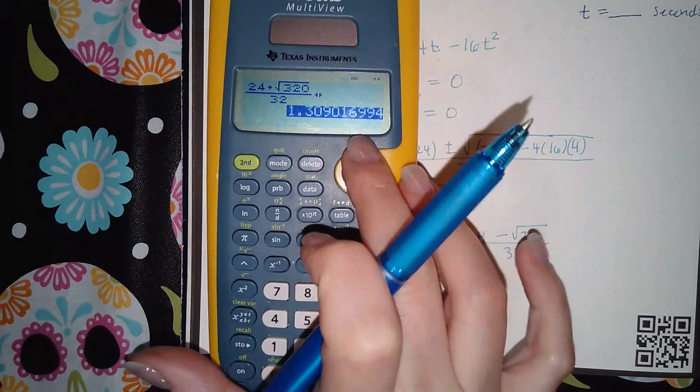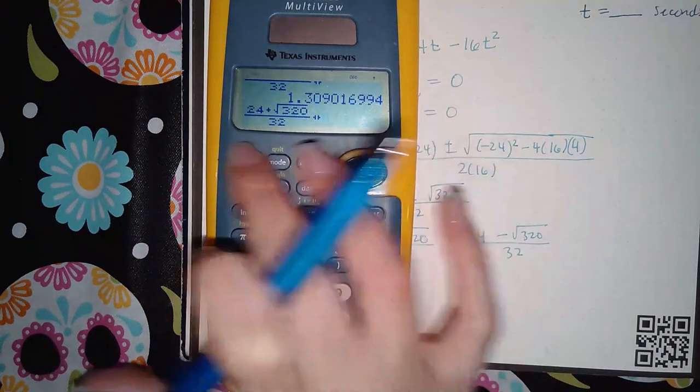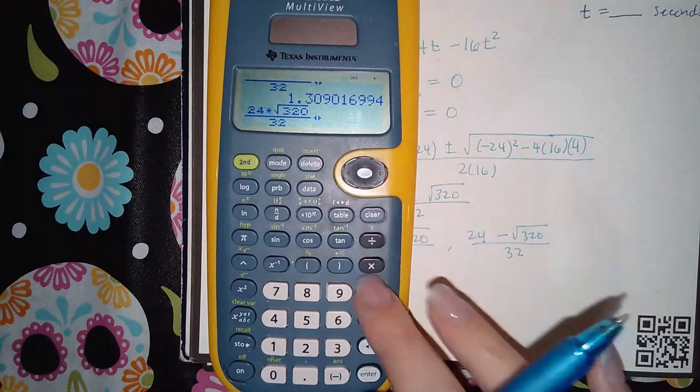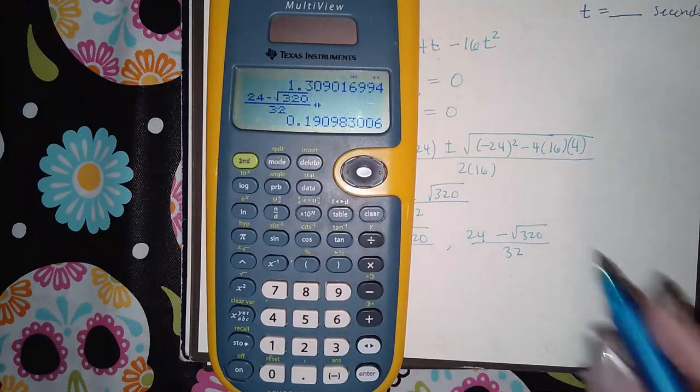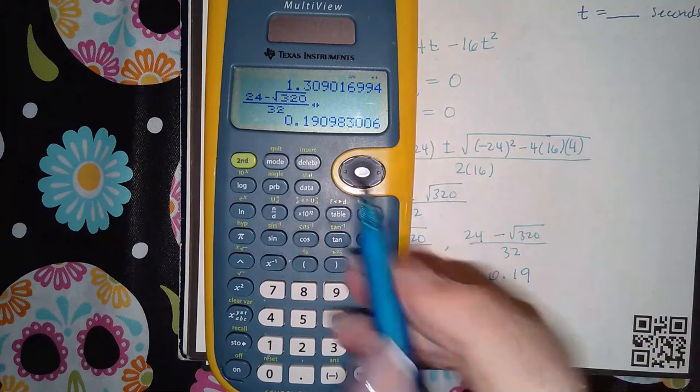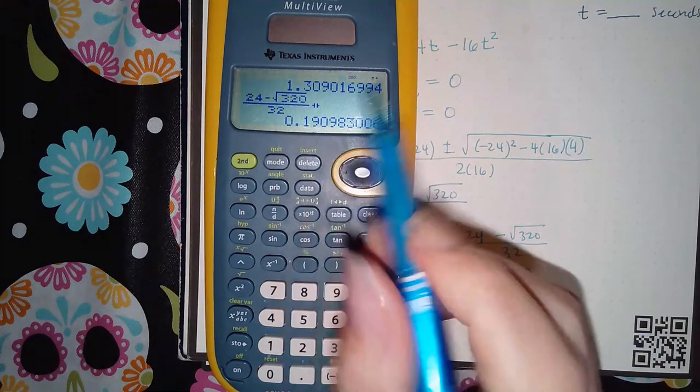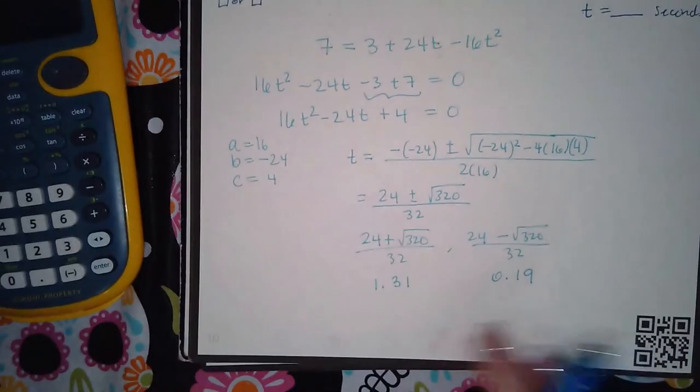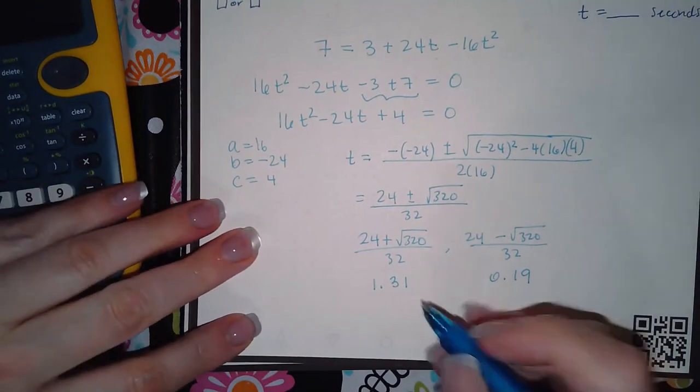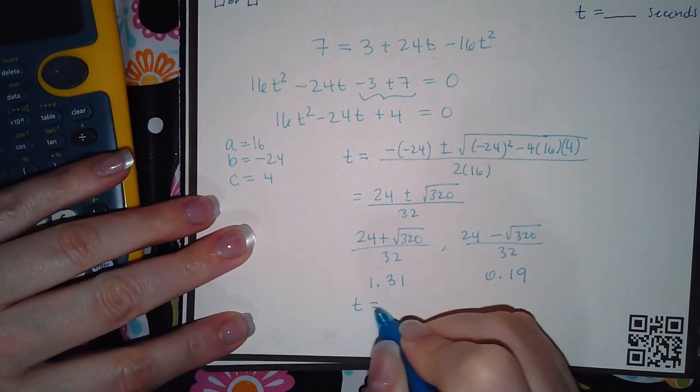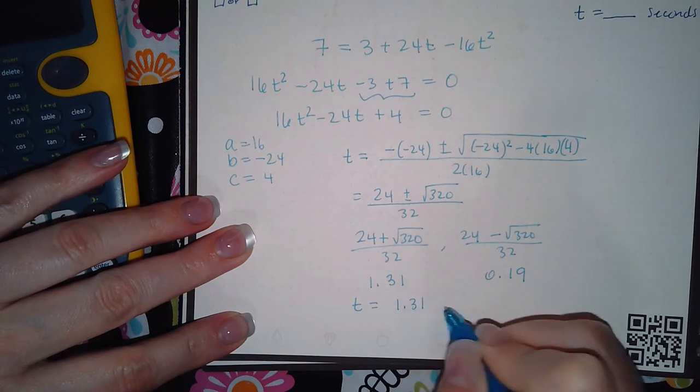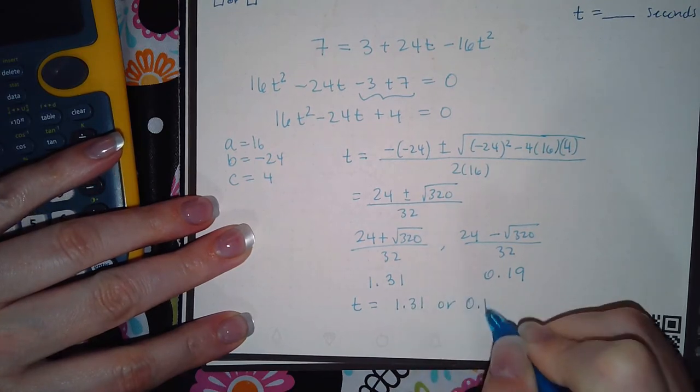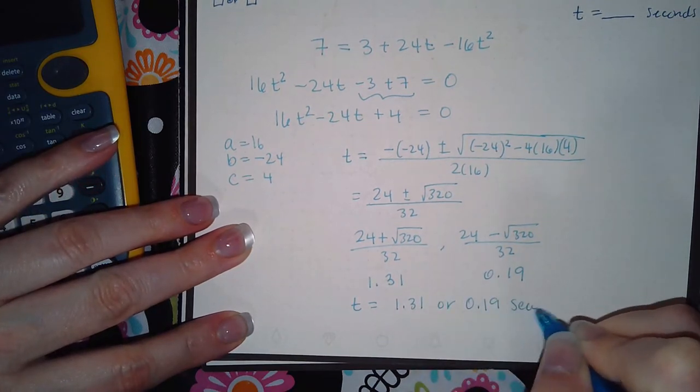Then I'm going to go back up there and make that a minus sign and hit enter, and I get 0.19. This 0 will not affect this 9. So I get two answers here. So in the computer you're going to say it is 1.31 or 0.19 seconds.